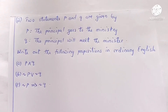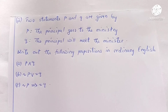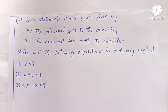The second part of this question is on logic. Two statements p and q are given: p is the statement 'the principal goes to the ministry,' and q is the statement 'the principal will meet the minister.' Write out the following propositions in ordinary English: the conjunction p and q; the disjunction not p or not q; and the implication not p implies not q.